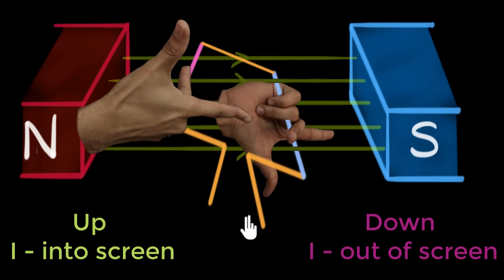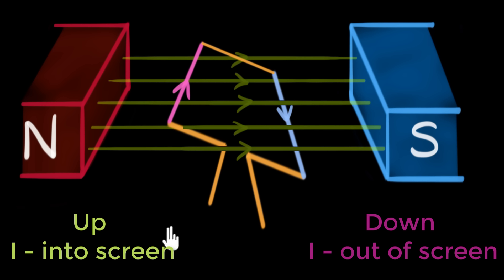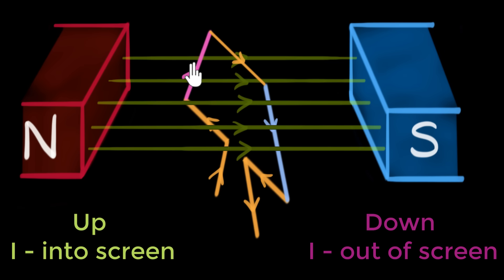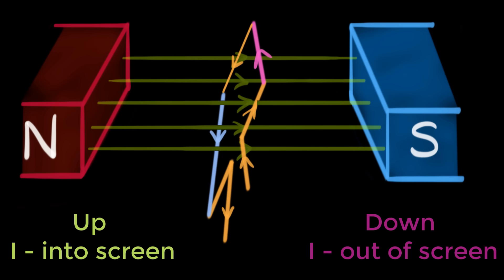Remember: when a wire moves upwards, the current goes into the screen; when it moves downwards, the current comes out of the screen. Now, replacing the hands with arrow marks, the current flows from the pink wire to the blue wire, through the external circuit — maybe a bulb — and back. The current continues to flow like this as the coil keeps rotating, until the pink wire starts moving downwards and the blue wire starts moving upwards.